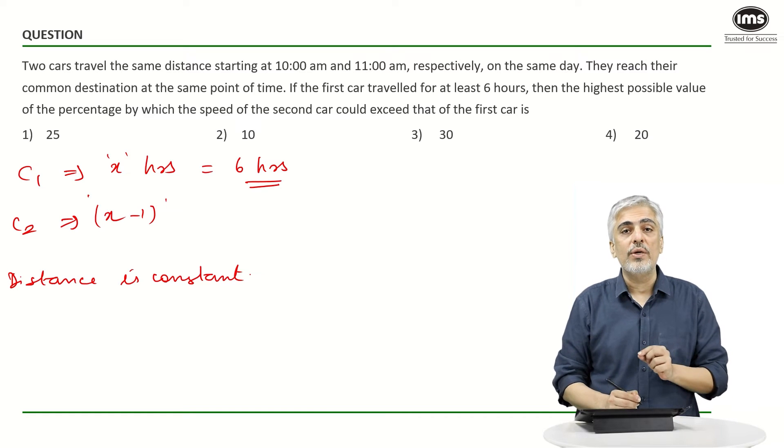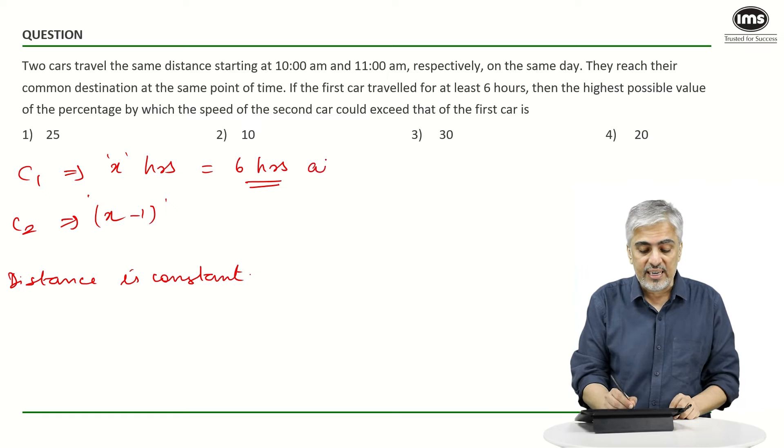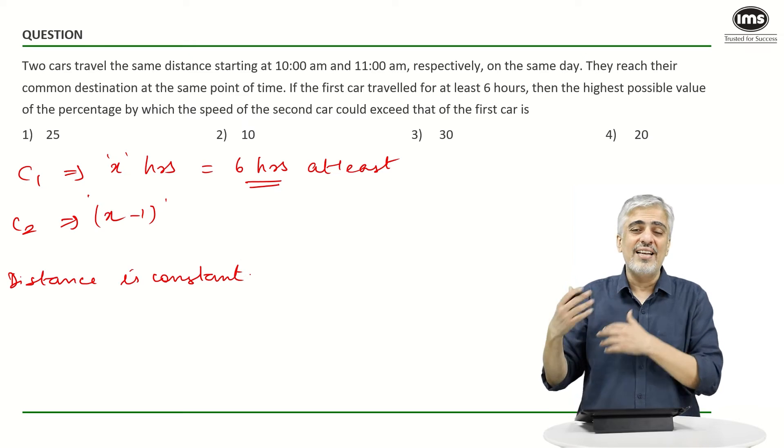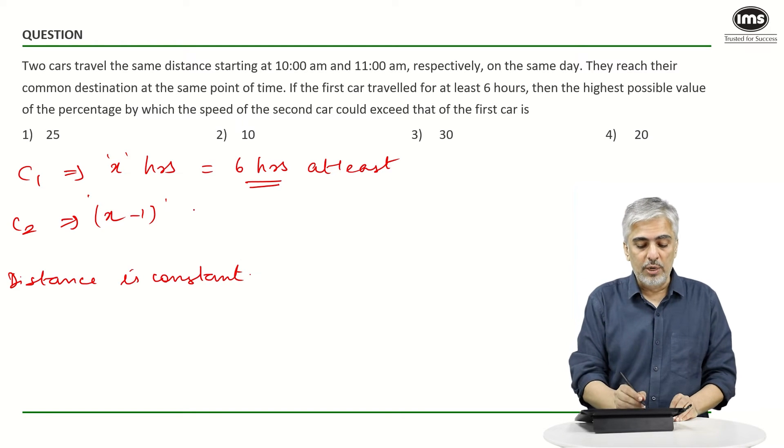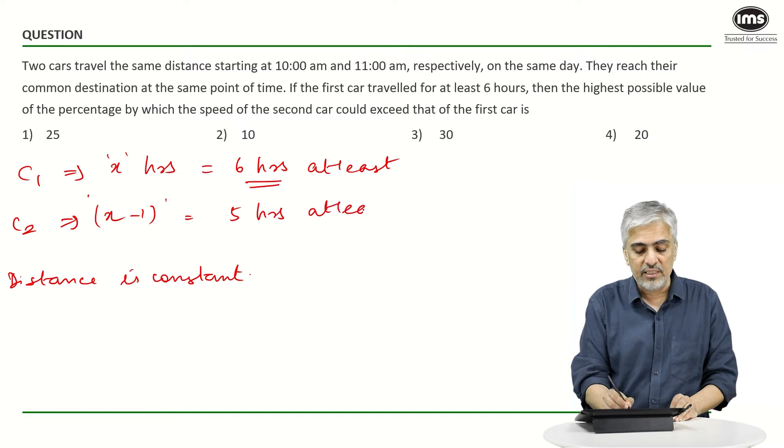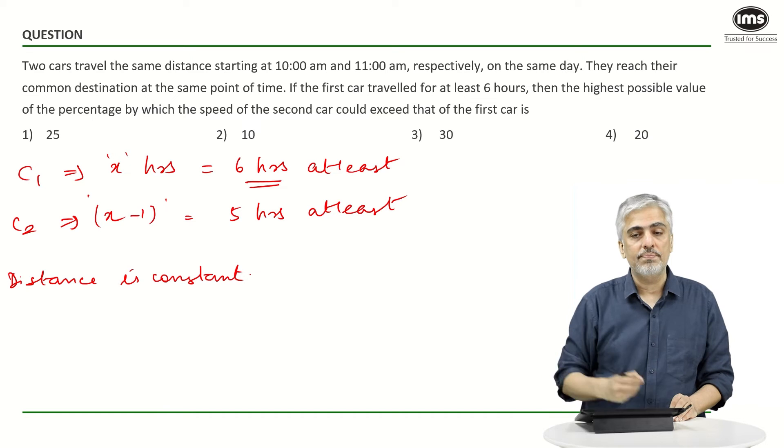Now understand the important thing over here. They haven't said that it has traveled for six hours, it has traveled for six hours at least. That means it could have traveled for six hours, seven hours, eight hours, nine, ten, hundred - I don't know. But whatever that be, the second car would have traveled for five hours at least. The difference would remain constantly one, right?